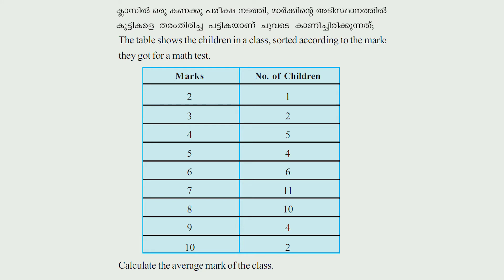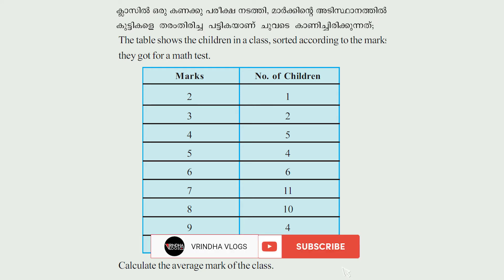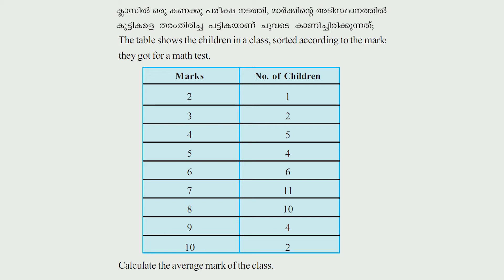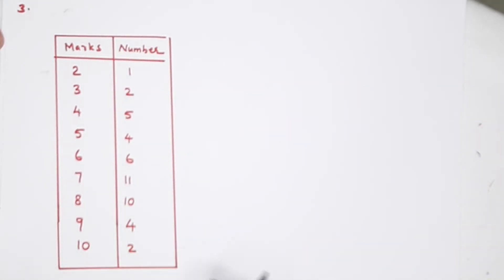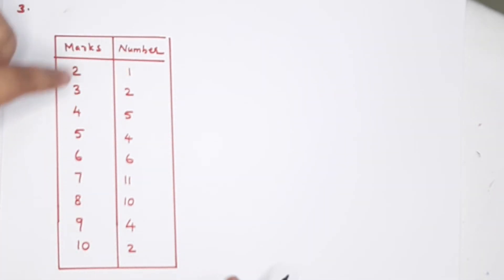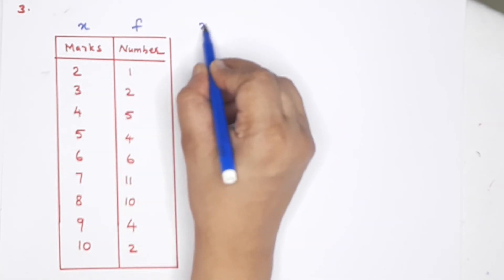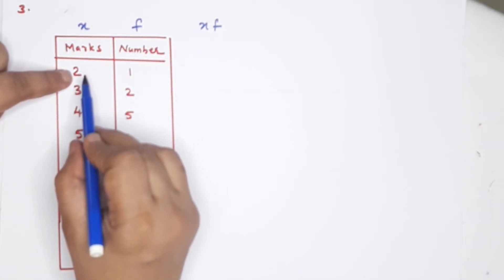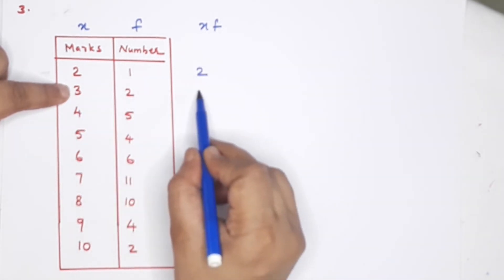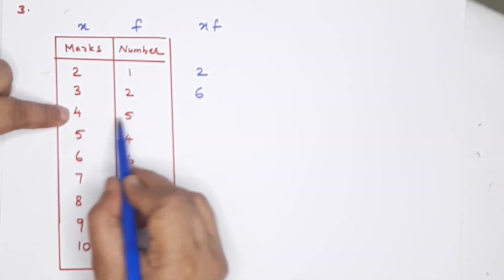Third question. The table shows the children in a class sorted according to the marks they got for a maths test. Calculate the average mark of the class. We have a table with marks (x) and frequency (f). We multiply x and f: 2, 6, 20, 25.